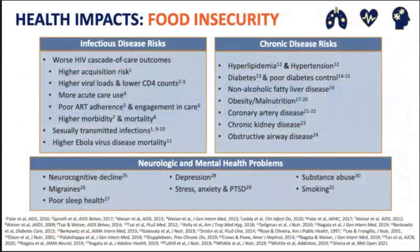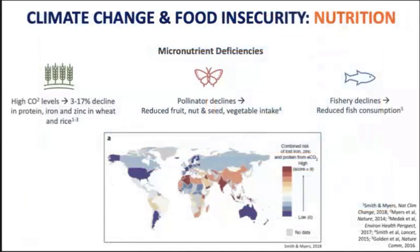Food insecurity is associated with a range of poor health outcomes, very important for HIV. We and others have shown that food insecurity is associated with worse HIV outcomes along the entire cascade of care — from higher acquisition risk to incomplete viral suppression to higher morbidity and mortality. It's also associated with other STDs and with higher mortality from Ebola virus disease. Importantly, it's associated with HIV-associated comorbidities: food insecurity is associated with more diabetes, hypertension, coronary artery disease, and neurocognitive issues and mental health issues like cognitive decline, anxiety, and depression.